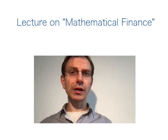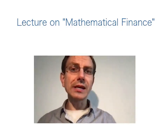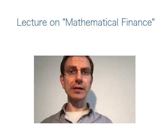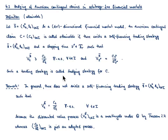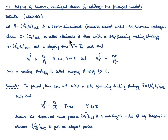So let us first have a look at what it means that an American contingent claim is attainable. I consider a financial market model S-bar consisting of the price process S0T of our risk-free security and this d-dimensional vector of the price process of our risky securities. Moreover, I consider an American contingent claim denoted here by C, and I call that claim attainable if the following holds true.